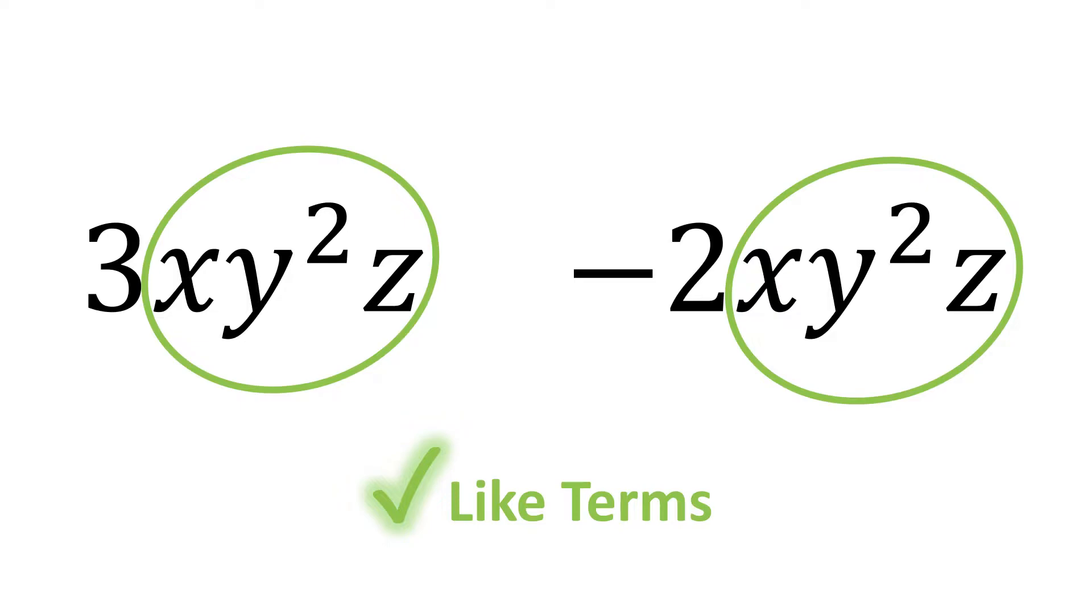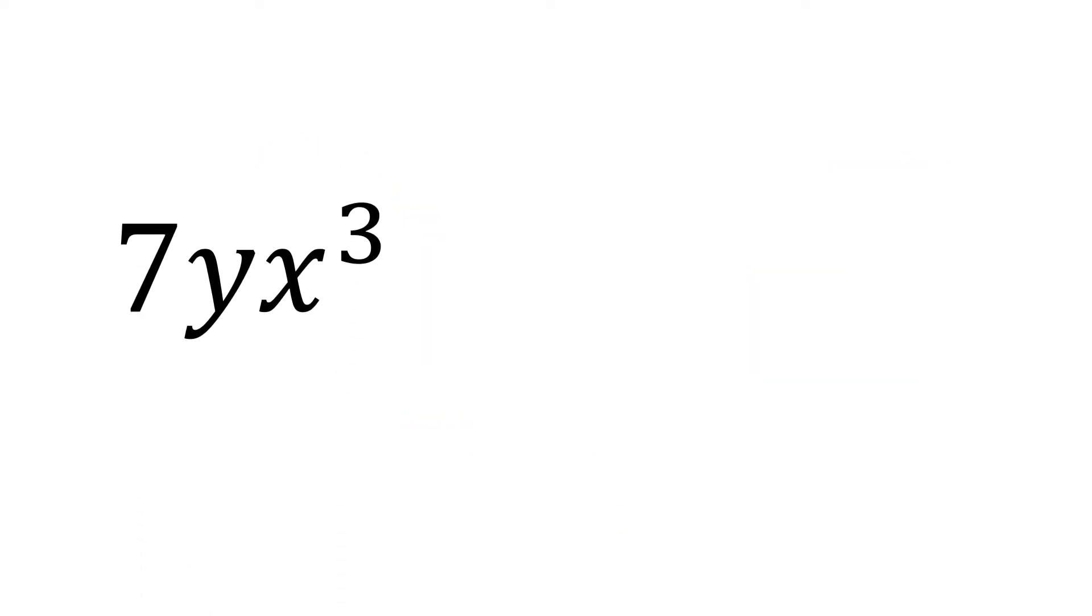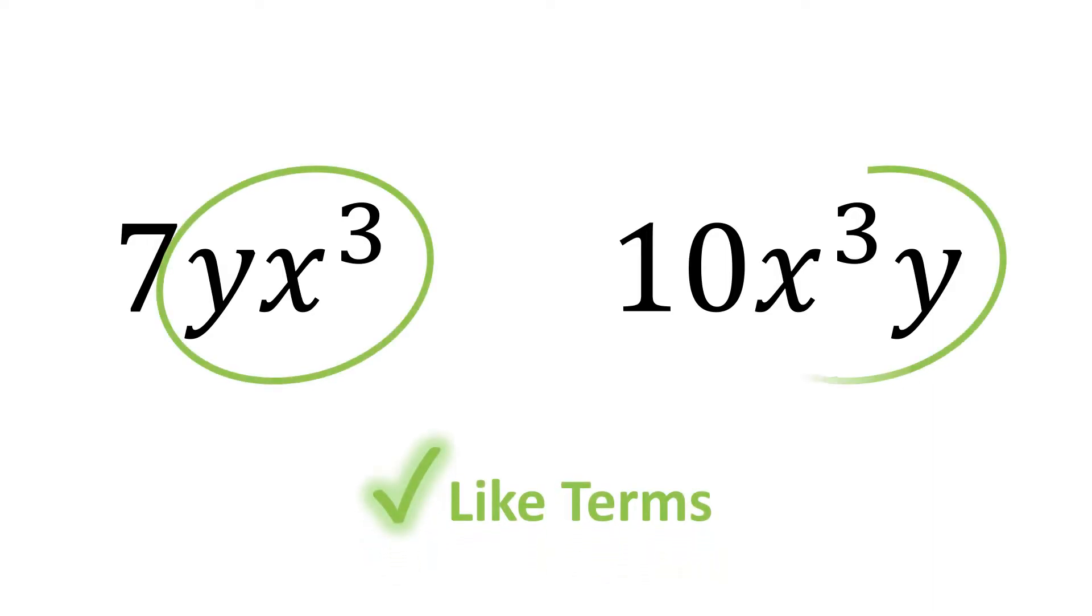The order of the variables does not matter. For example, 7yx cubed and 10x cubed y are like terms, because they have the same variables raised to the same exponents.